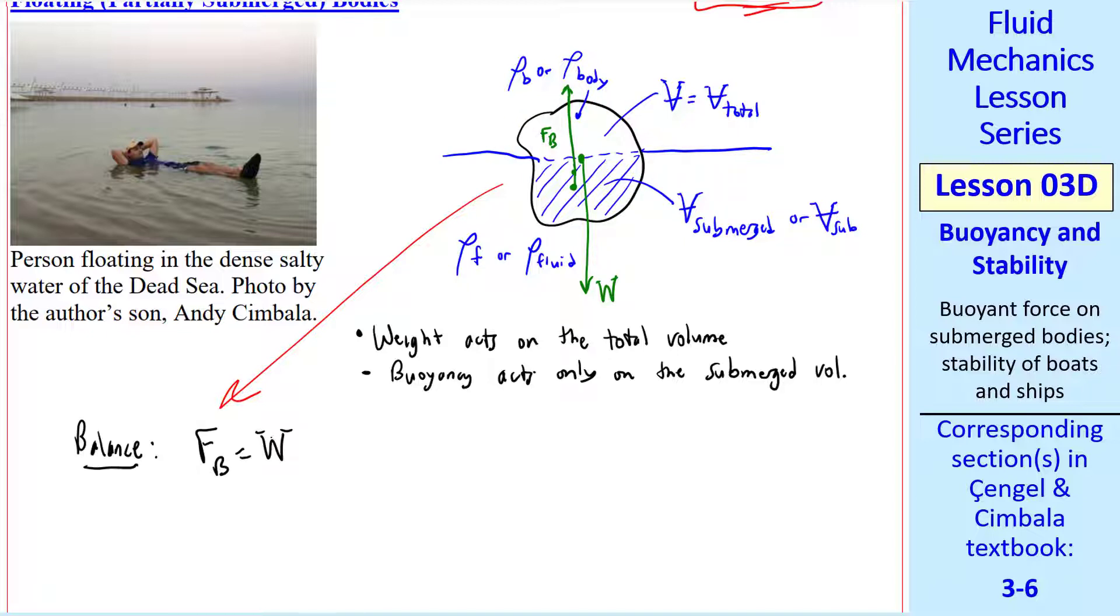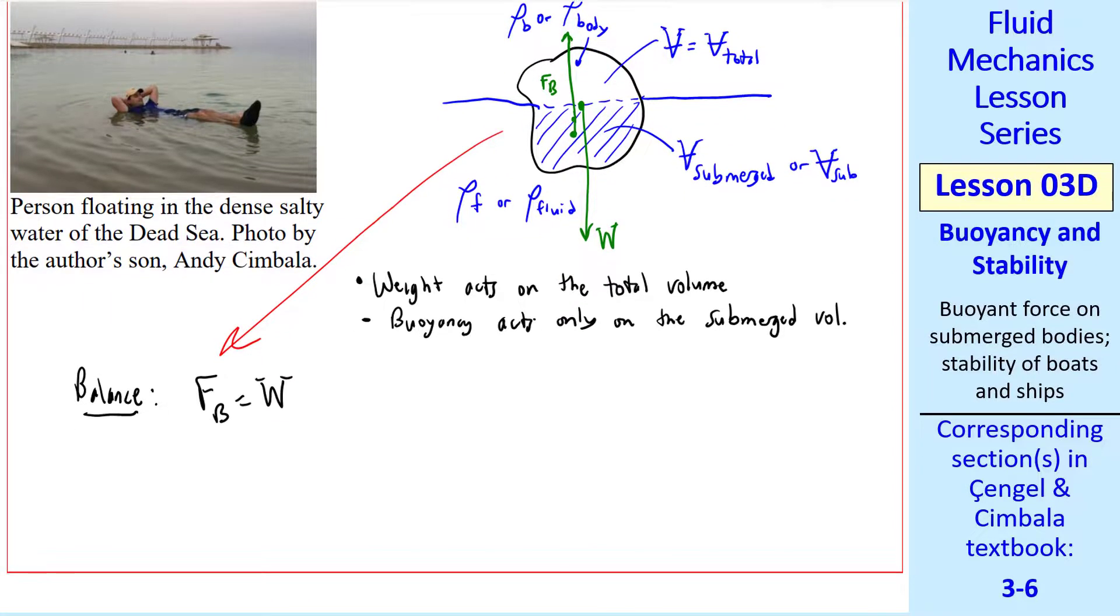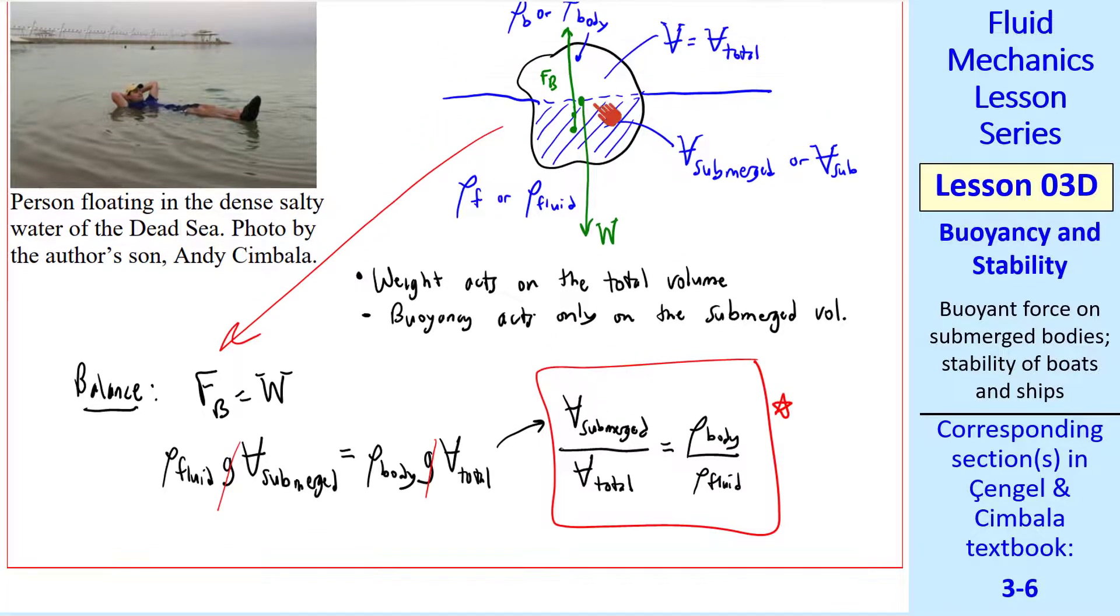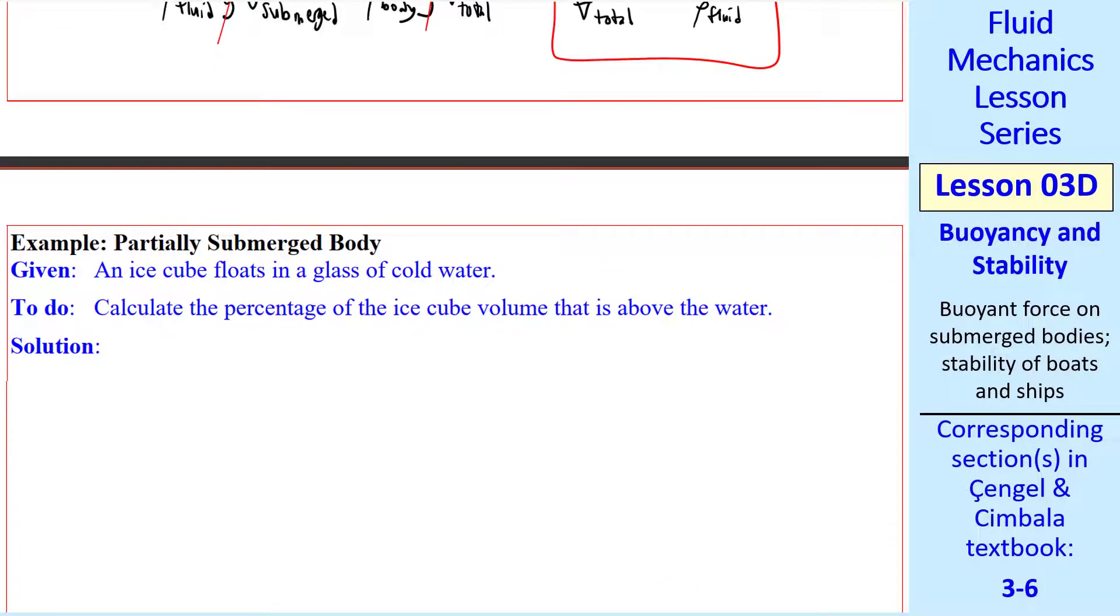The balance is that F_B equals W. And we can analyze this as follows. The buoyancy force is ρ_fluid, g, times the volume that is submerged. W is ρ_body, g, times V_total. The g's cancel. And we can write an equation for V_submerged over V_total. In other words, the portion of the body that's submerged by volume. And it turns out to be ρ_body over ρ_fluid. For a floating body like this, ρ_body has to be less than ρ_fluid. So this value is less than 1.